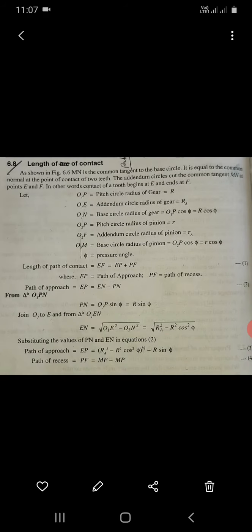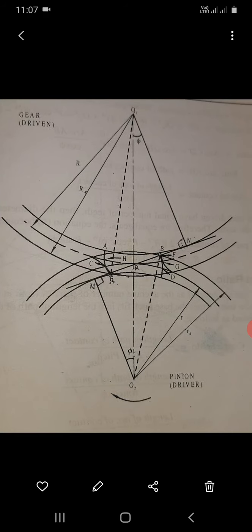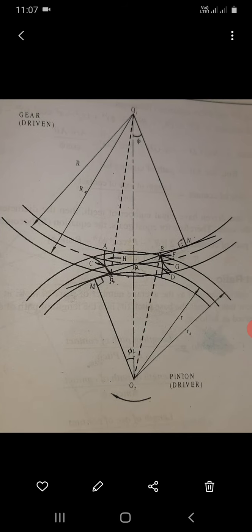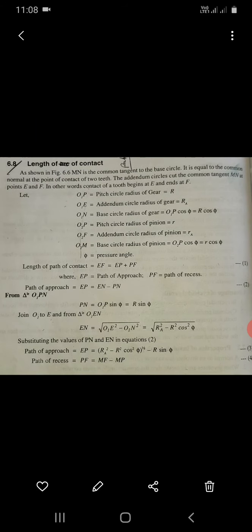Where EP is the path of approach and PF is the path of recess. Path of approach EP equals EN minus PN. From triangle O1PN, PN equals O1P sin phi, or R sin phi.